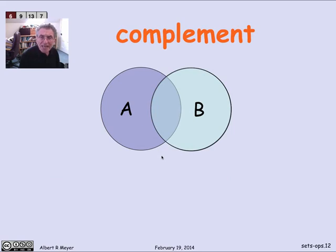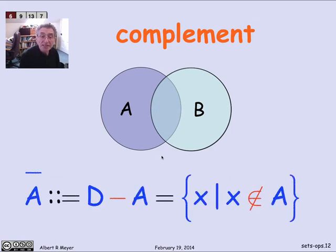And a special case of the minus operation, of the difference operation, is complement. When you know the overall domain that you expect all your sets to be part of, then you can define A complement to be everything that's not in A, the set of x such that x is not in A, where x is understood to be ranging over some domain of discourse.